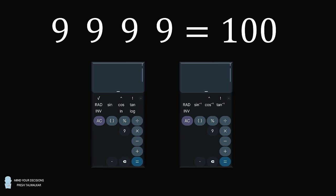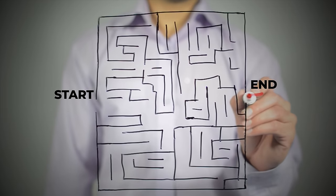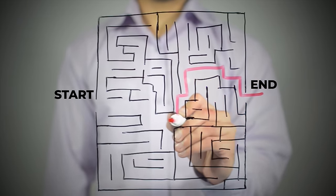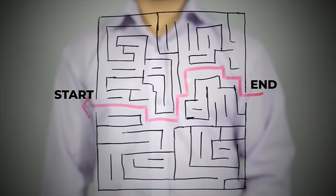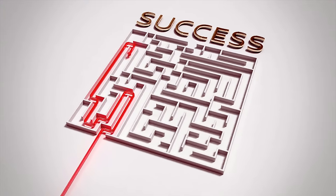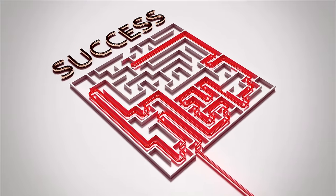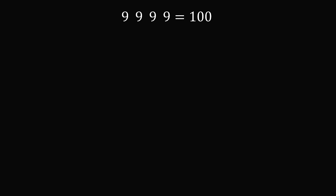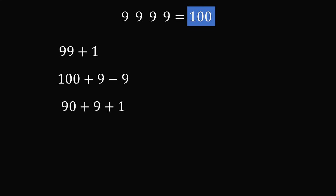So let's see how we can solve this puzzle. Sometimes it makes sense to start from the goal and work backwards. So we could start with 100 and work backwards, or just power our way through from the beginning. Working backwards: 100 equals 99 plus 1, or 100 plus 9 minus 9, or 90 plus 9 plus 1, or 10 times 10, or 10 divided by 0.1, or 900 divided by 9. If we could make the four nines equal any of these, we'd have an answer — and all the solutions are variations on these ideas.